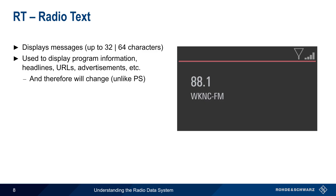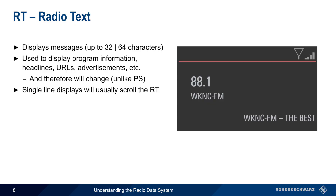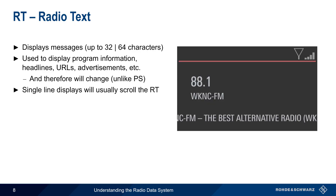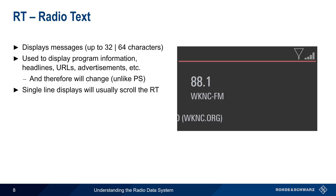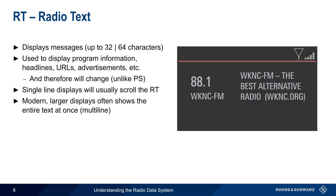Unlike PS, radio text usually changes dynamically during a program. Older receivers and receivers with only a single line display will usually scroll the radio text across the screen, but larger, more modern receivers will often show the entire text at once.